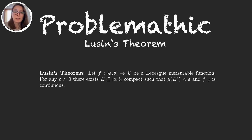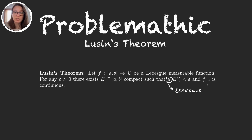So Lusin's theorem says that we have a function from some closed interval [a, b] to the complex numbers, and that function is Lebesgue measurable. So for any epsilon, for any small number, we can find a compact set E in the domain that is very large — the complement of E is small from the point of view of Lebesgue measure — such that when we restrict our function to this big set E, the function is continuous.